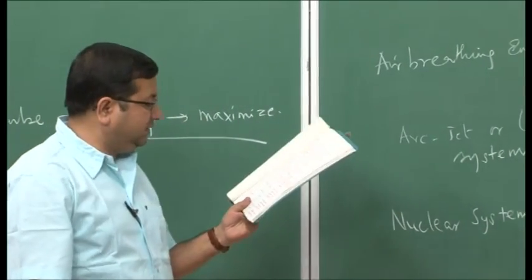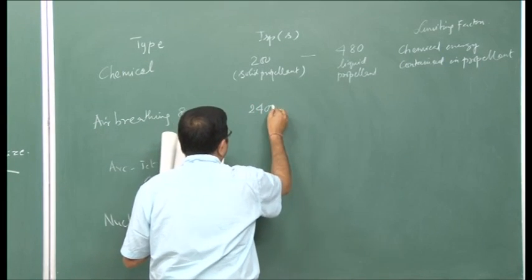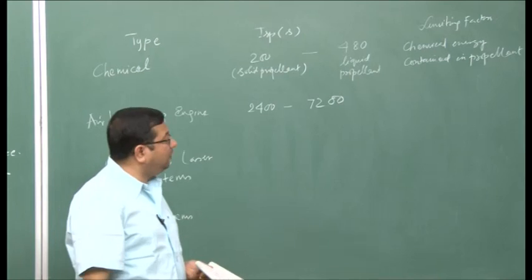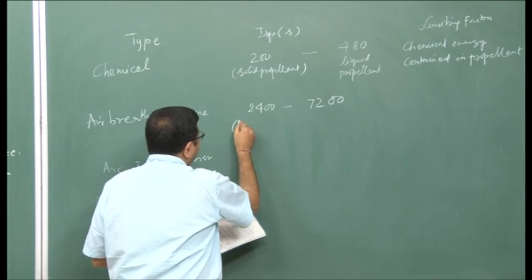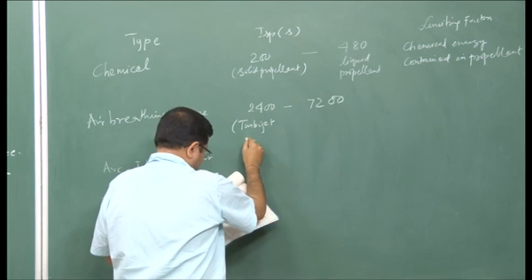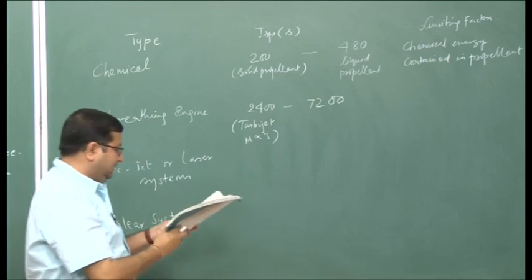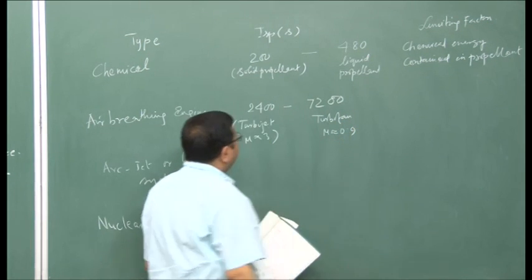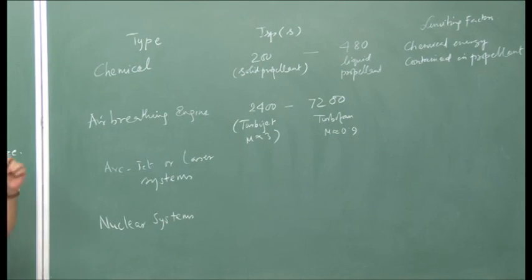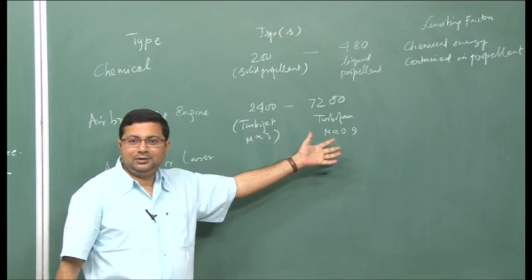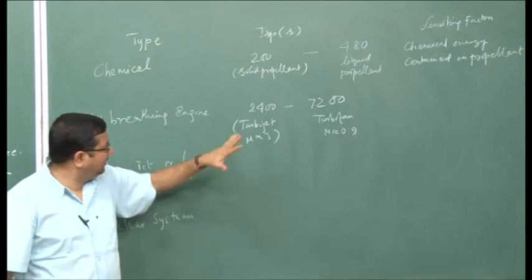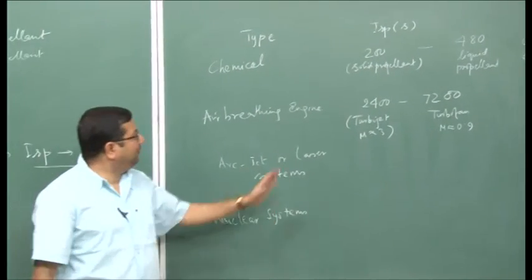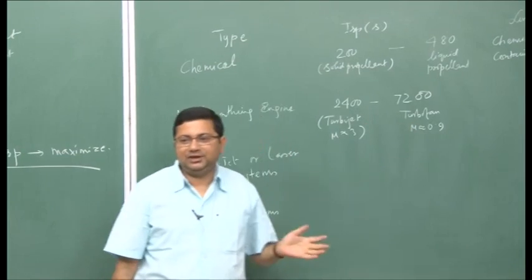When we come to air breathing engines, they have very high specific impulse compared to rocket engines — ranging between 2400 to 7200 seconds, where 2400 is typically for turbojets at Mach 3, and turbofan at Mach 0.9 gives about 7200. If we have such a large specific impulse, why do we not use them for rockets? The specific impulse is high because the main propellant is atmospheric air, which the engine need not carry. It breathes the air and pushes it out.